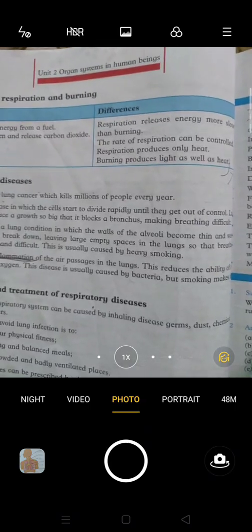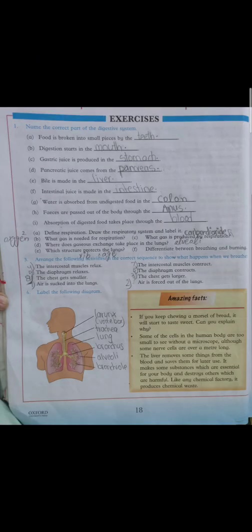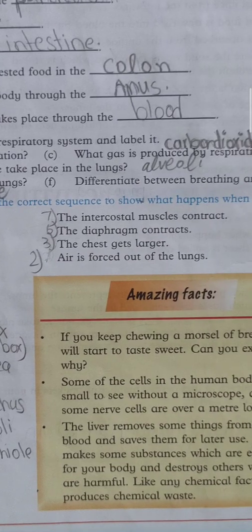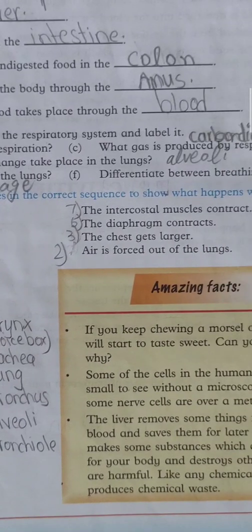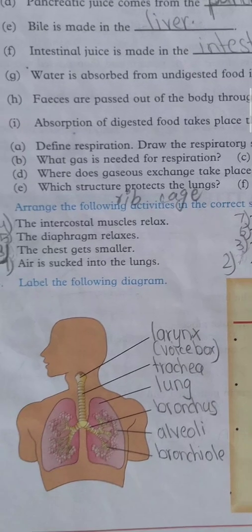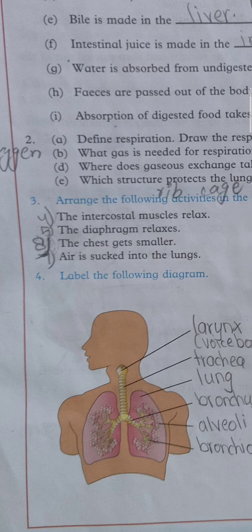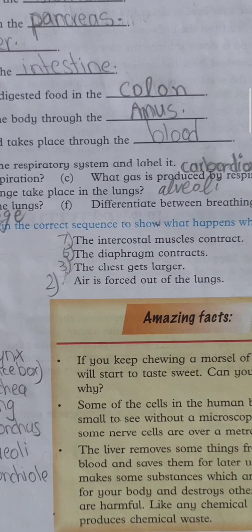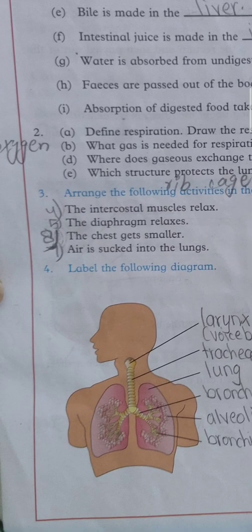Question 3 is: arrange the following activities in the correct sequence to show what happens when we breathe. Number 1, air is sucked into the lungs. Number 2, air is forced out of the lungs. Number 3, the chest gets larger. Number 4, the intercostal muscles relax. Number 5, the diaphragm relaxes. Number 6, the diaphragm contracts. Number 7, the intercostal muscles contract. Number 8, the chest gets smaller. When the chest gets smaller, you exhale out the air. Next, he has told us to label the following diagram.